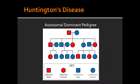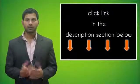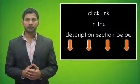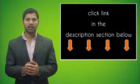What is the mnemonic to help you remember the CAG repeats? The mnemonic is: Caudate loses ACh and GABA.